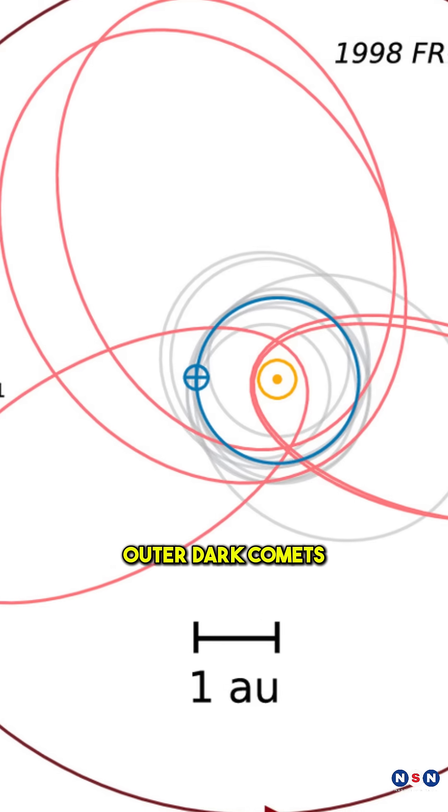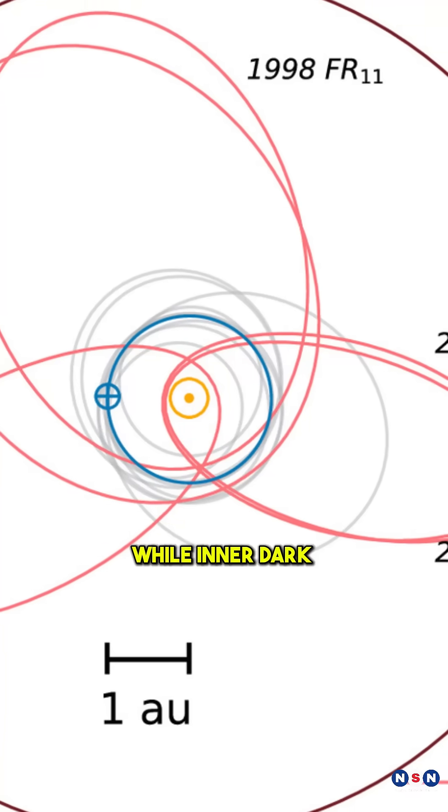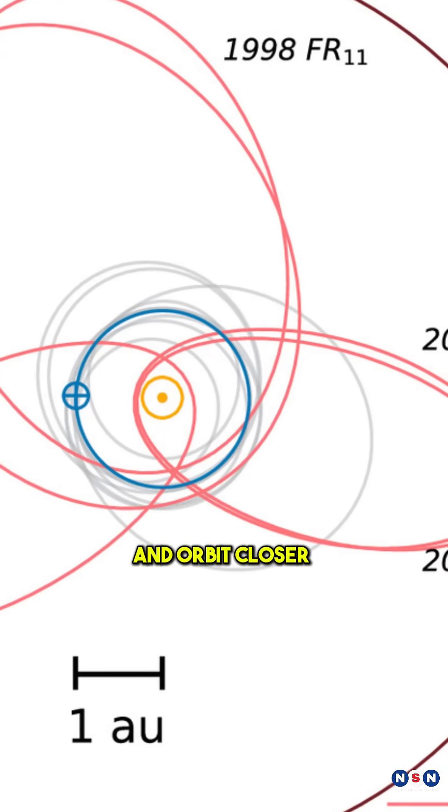Divided into two types, outer dark comets are larger and found in the solar system's distant, icy regions, while inner dark comets are smaller and orbit closer to the sun.